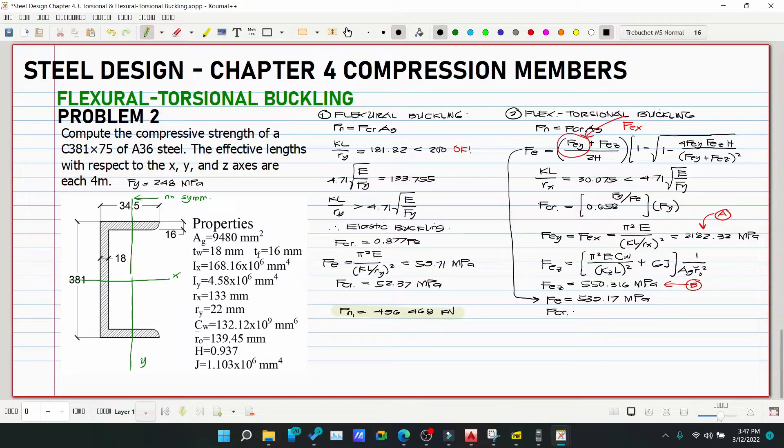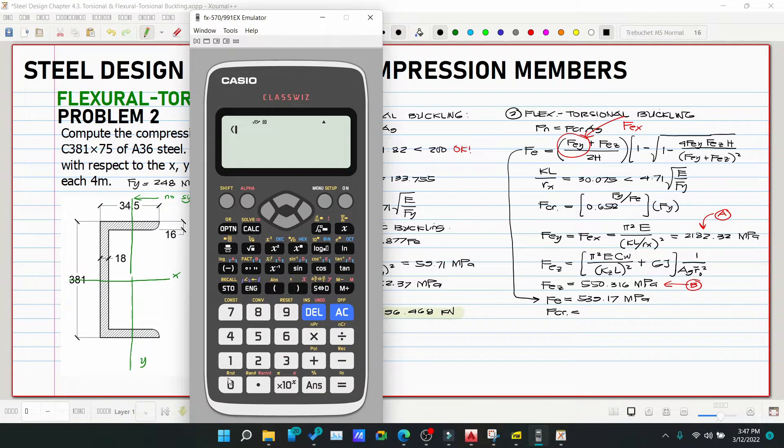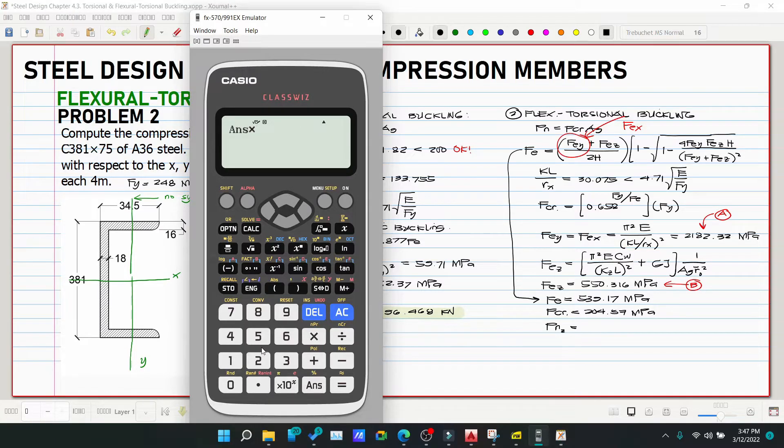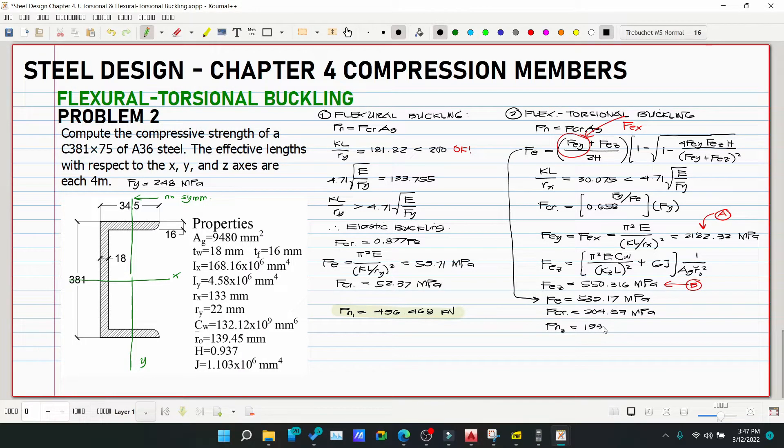Now we can substitute our Fcr. Fcr = 0.658^(248/539.17) × 248 = 204.57 megapascals. We can substitute Pn sub 2: 204.57 × 9480 / 1000 = 1939.32 kilonewtons. So the member is strong in flexural-torsional buckling.